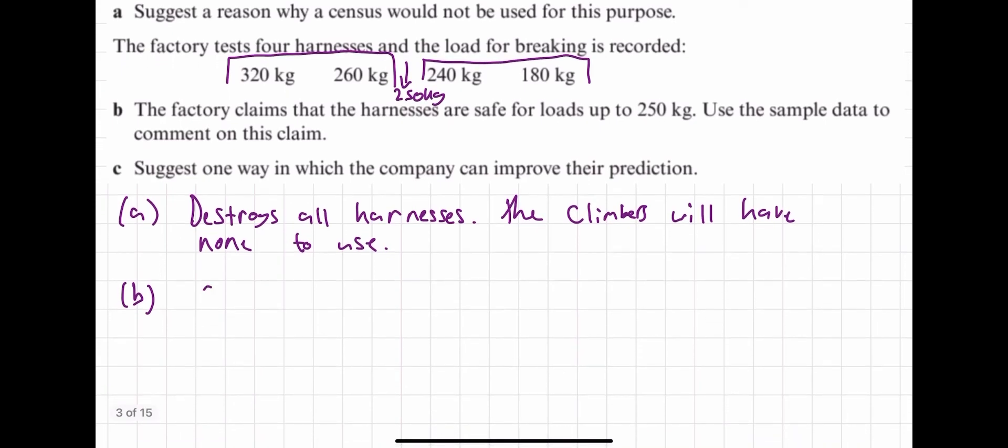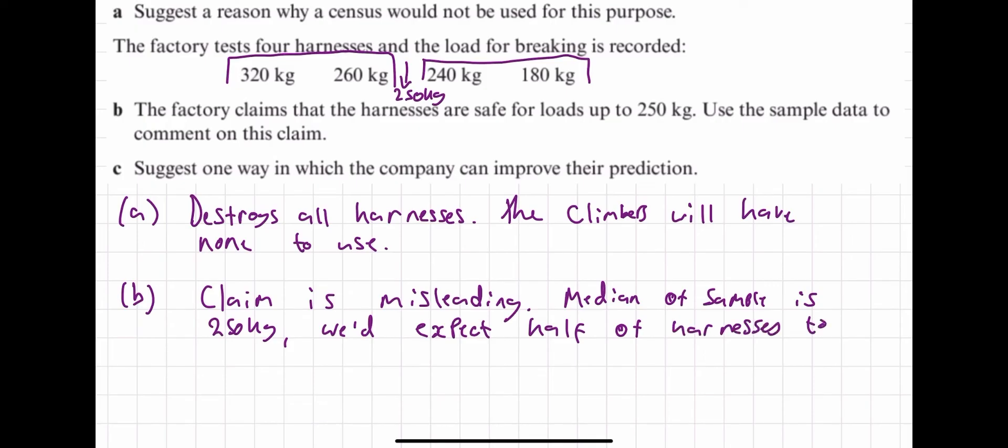So if I'm gonna write this in a sentence, I might say claim is misleading. Why? Median of samples. So what does that mean? It means we'd expect half of harnesses to break at a load of less than the median.